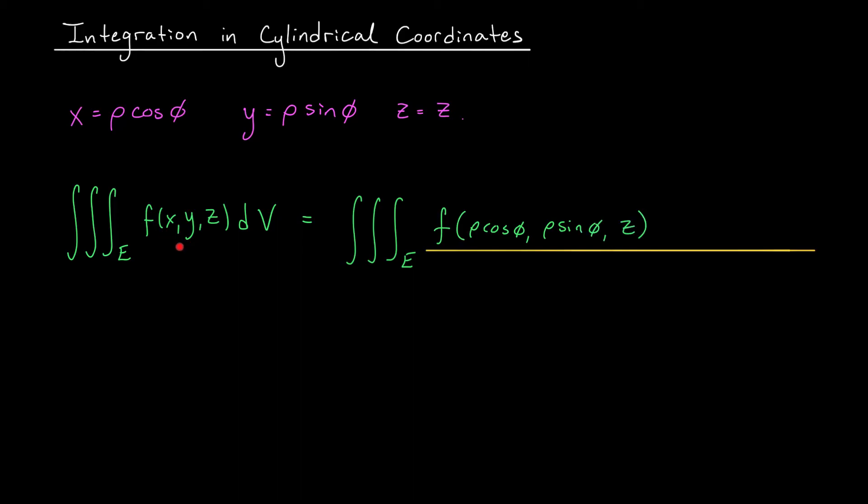In addition to converting our x's, y's, and z's, we also have to be careful about this volume factor, dV. Remember, when we learned about double integrals, we saw that our area factor, dA, can get a little bit warped when we switch coordinate systems. To account for that deformation in area, we looked at the Jacobian, right?